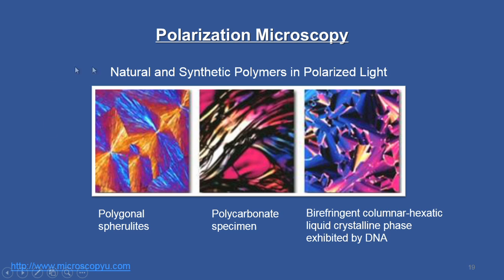I will now quickly move on to the next variant: polarization microscopy. Look at this slide — very interesting microstructures from microscopy.com. What you are seeing are microstructures of polymeric materials, both natural and synthetic polymers observed under polarized light. You can see polygonal spherulites — each one is a single spherulite entity — in a polycarbonate specimen, and also a biological sample. This is shown to appreciate the enhanced contrast compared to bright field illumination.